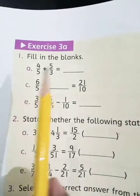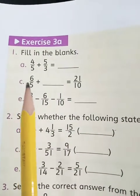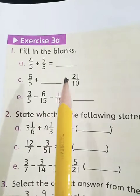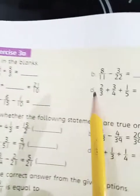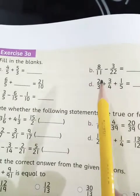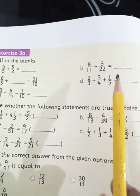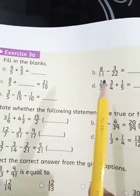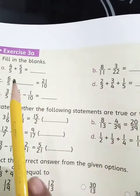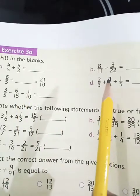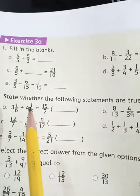This is exercise 3a which is related to fraction. Question number 1. Fill in the blanks. Part a: 4 upon 5 plus 5 upon 3 equals dash. Part b: 8 upon 11 minus 3 upon 22 equals dash. You can do these two questions very easily. First make denominators same and then do the addition and subtraction.